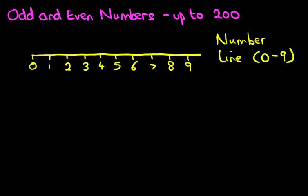Now what we're going to do is populate this number line with all the odd numbers and the even numbers. Do you recall how we did this before? We start at 0. Is 0 an odd number or an even number? That's right — 0 is an even number. And now we count in 2s, and all of those are the even numbers. So after 0 we have 2, after 2 it's 4, after 4 it's 6, and the last one is 8.